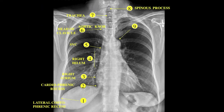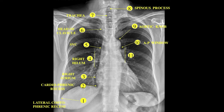The aortic arch manifests itself as an aortic knob-appearing structure. The space known as the aortic pulmonic window lies between the aortic arch and the top of the left pulmonary artery. Notice the left hilum is more superior in location than the right hilum because the left pulmonary artery rides over the left bronchus.